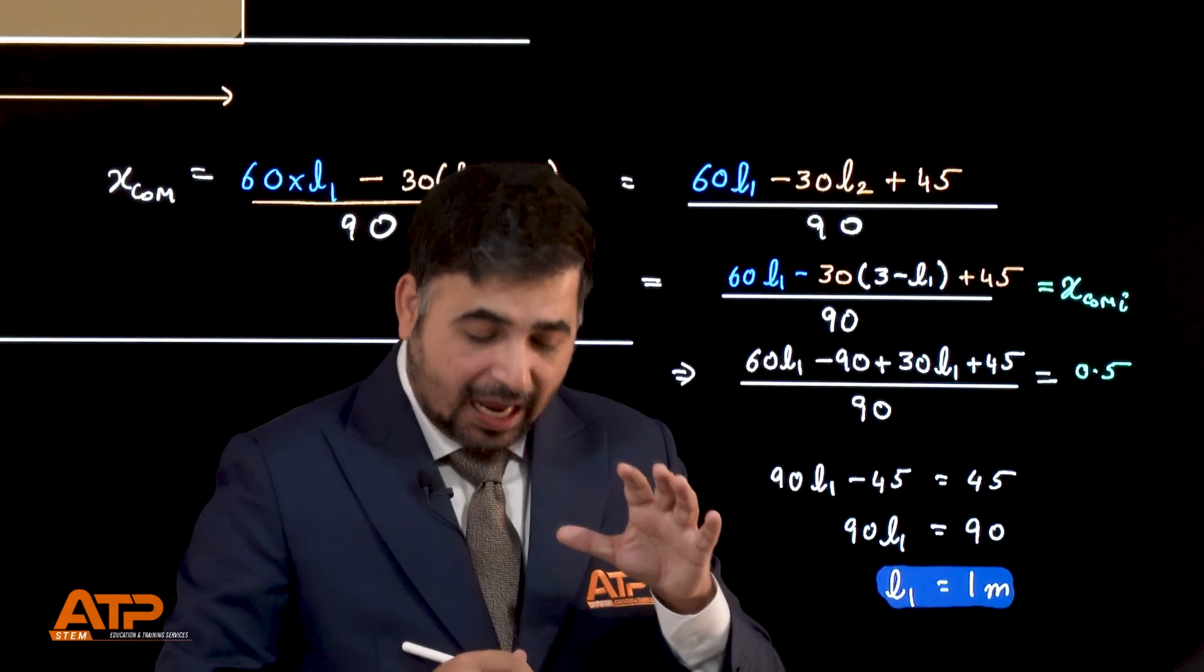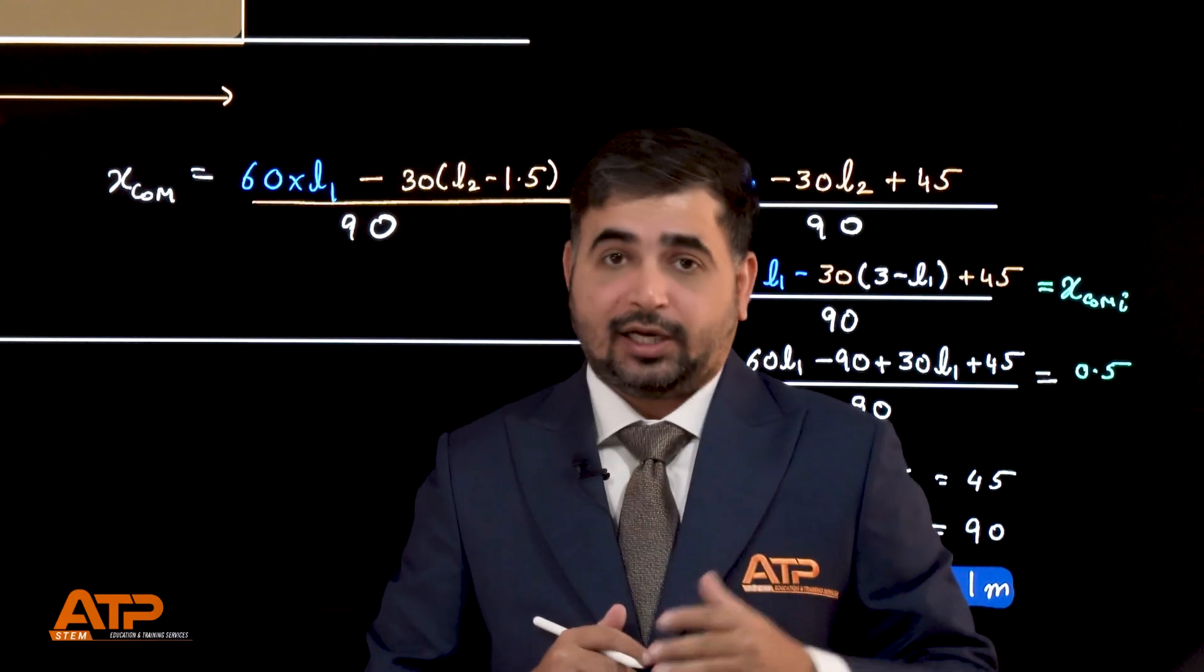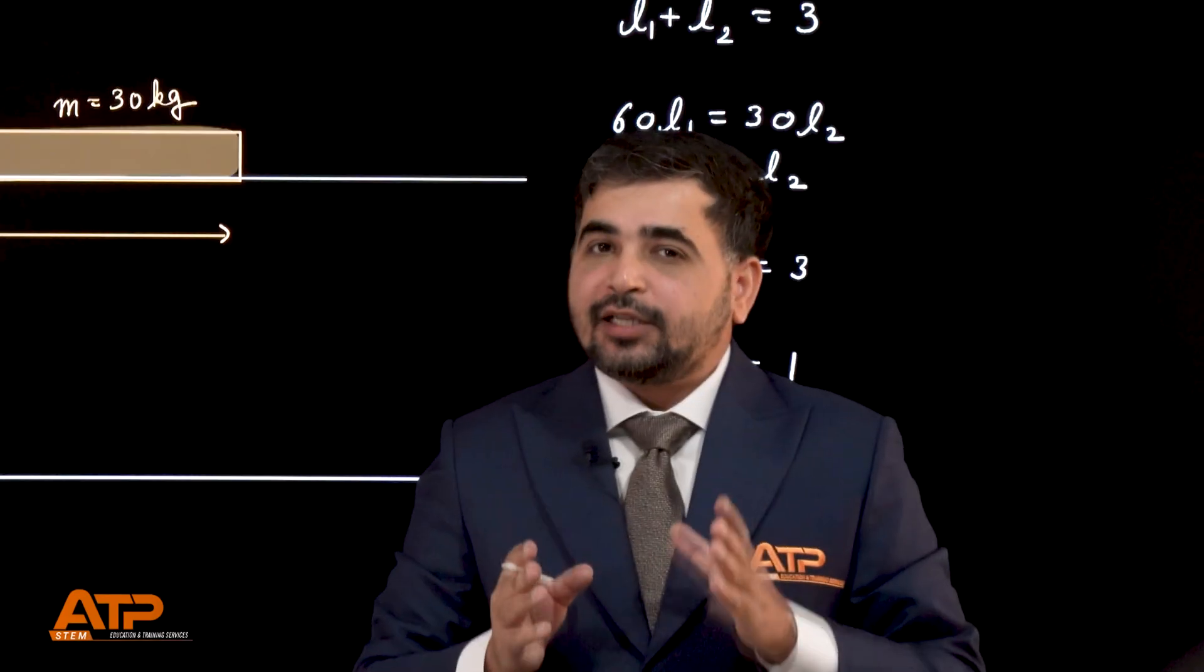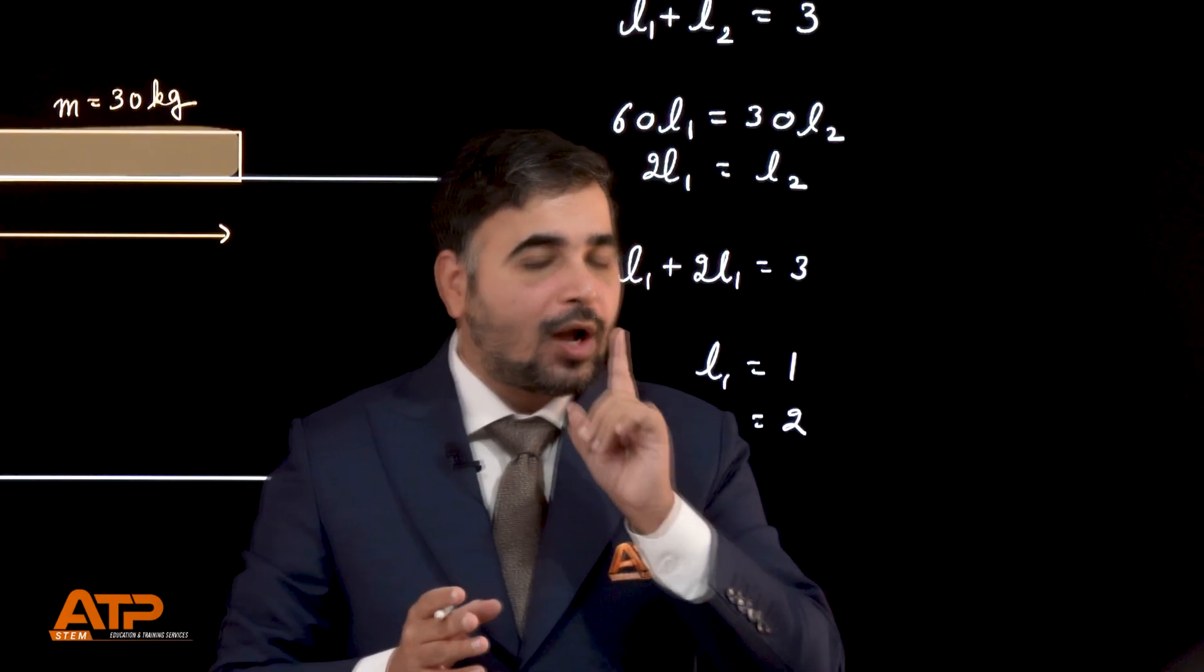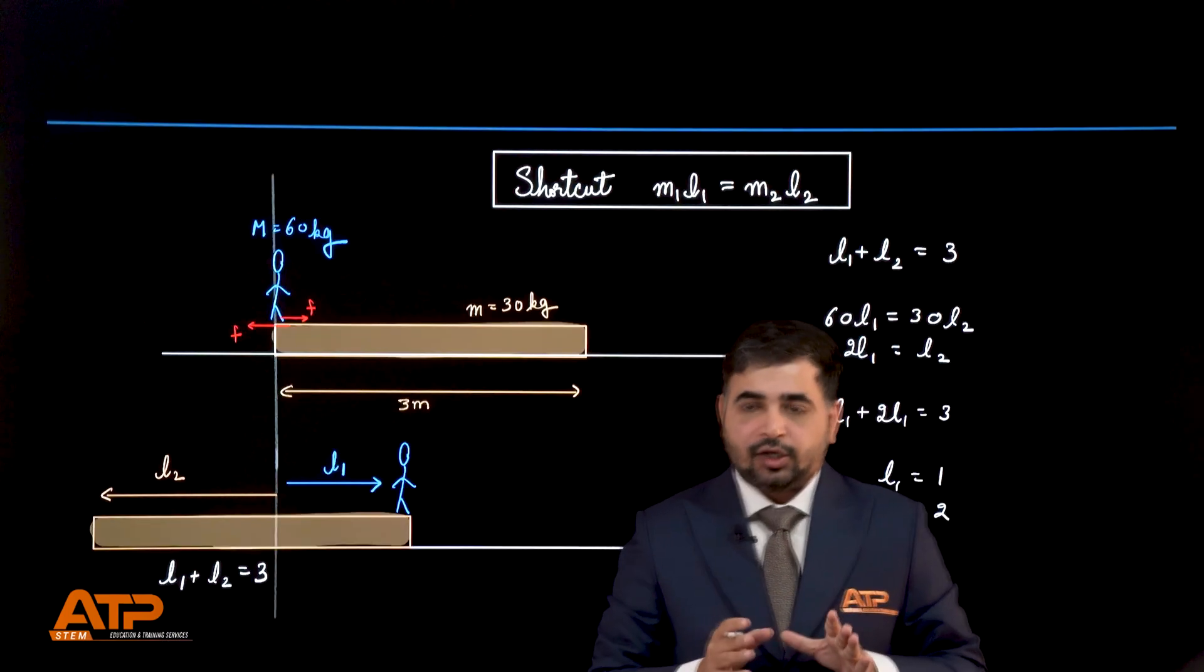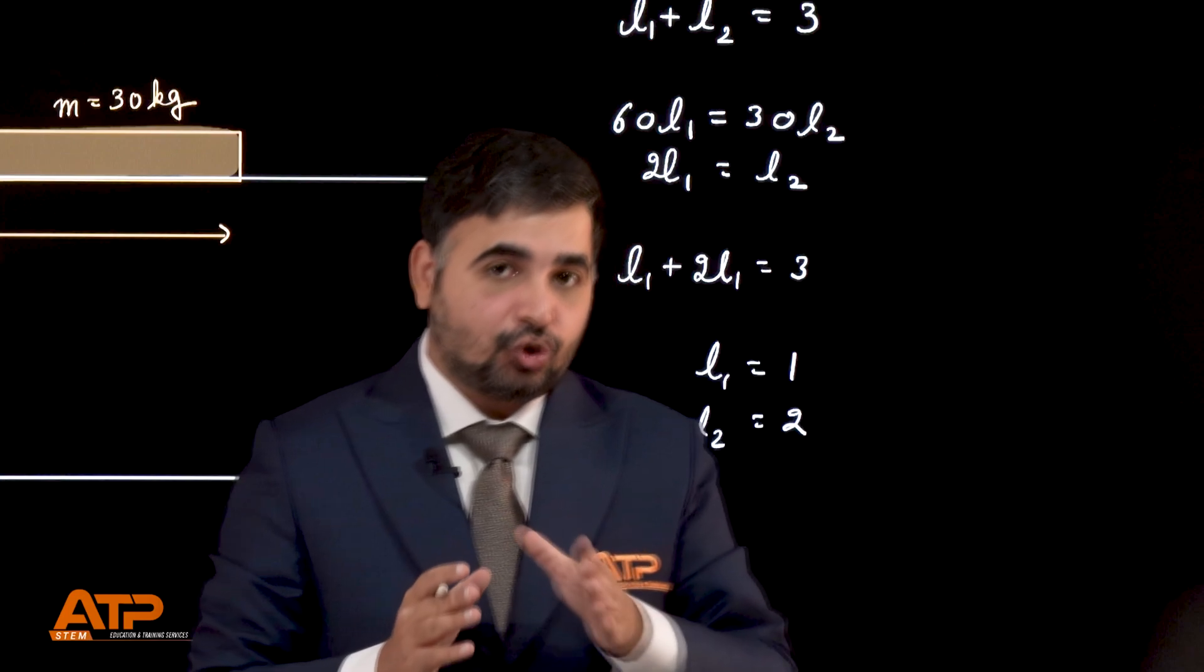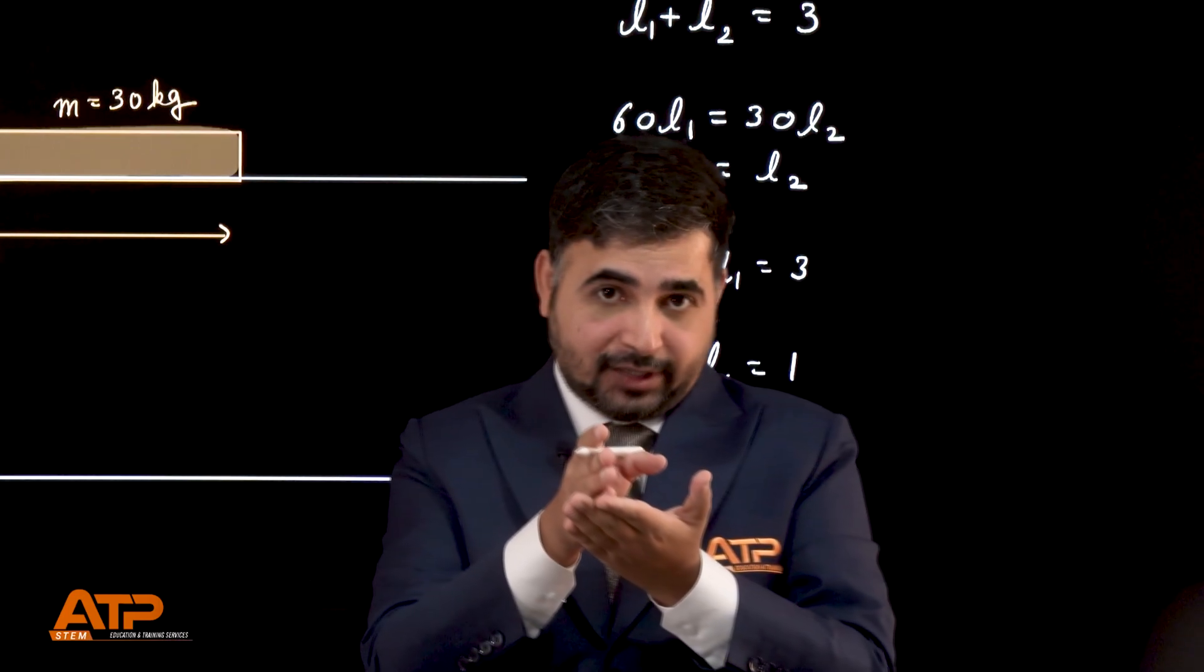Now, this entire question can be solved very quickly. There is a shortcut here. What is the shortcut? Let's look at that. To understand the shortcut, you need to understand one key point. Generally, you can choose origin wherever you want. But over here, we're going to choose the origin exactly at center of mass.